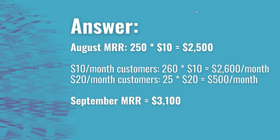For August MRR: 250 customers all paid $10, so August MRR is $2,500. Multiply that by 12 and you get the Annual Recurring Revenue. However, ARR is difficult to pin down because it changes on a month-by-month basis depending on growth or decline.